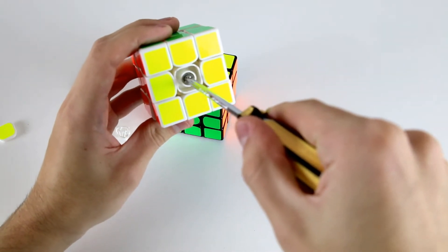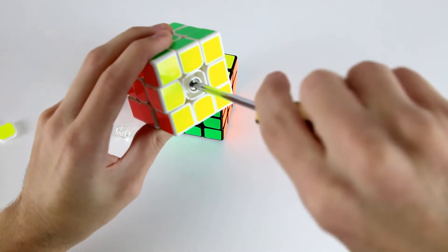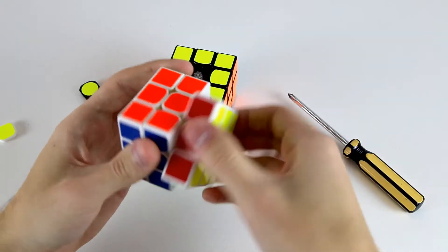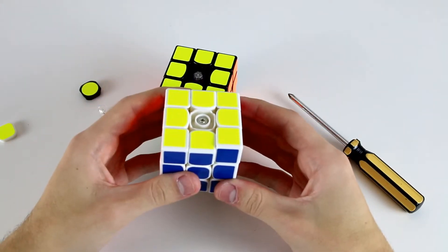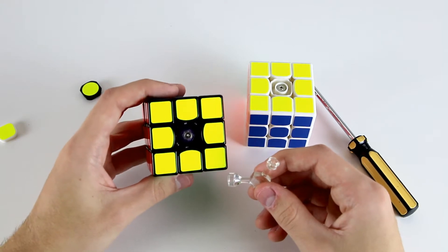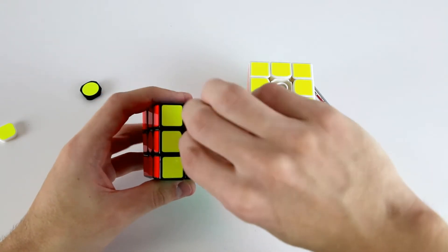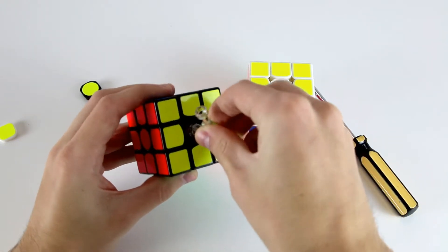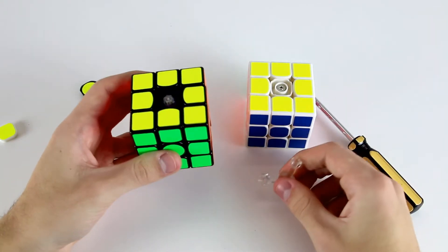You can also do it the other way, so loosen it like so and then the layer will become slightly easier to move. Some cubes don't have a screw and have slightly different adjustment systems but the principle is the same. You can turn it clockwise to tighten or anti-clockwise to loosen the cube.